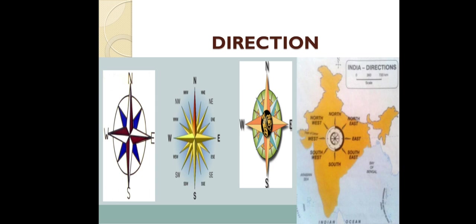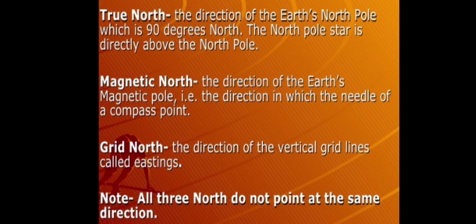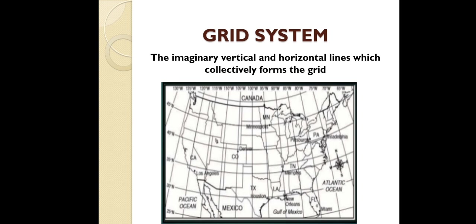Then direction — a map is always aligned with north towards the top. There are three types of north: first is the true north, which is the direction towards the north pole; then magnetic north, the direction where the magnetic needle points; and third is grid north, the direction of vertical grid lines called easting as shown in the projection. Then grid system — grids are formed by latitude and longitudinal lines, which are imaginary vertical and horizontal lines collectively known as the grid.